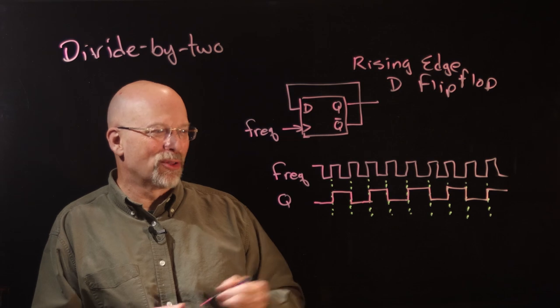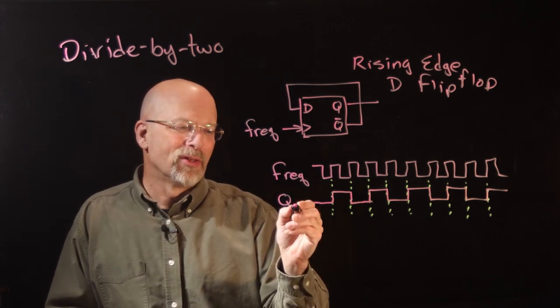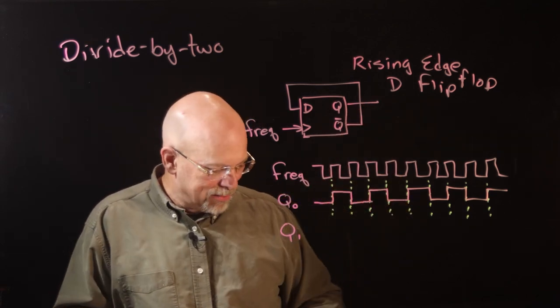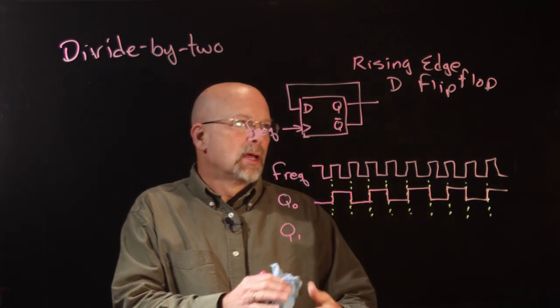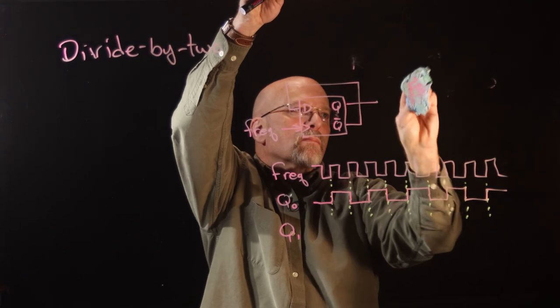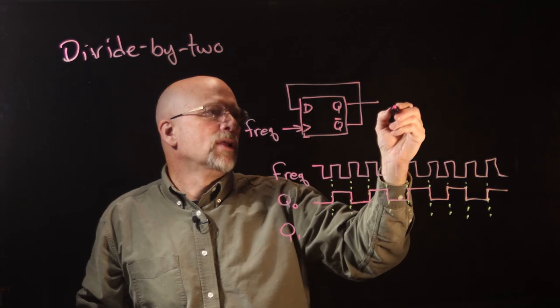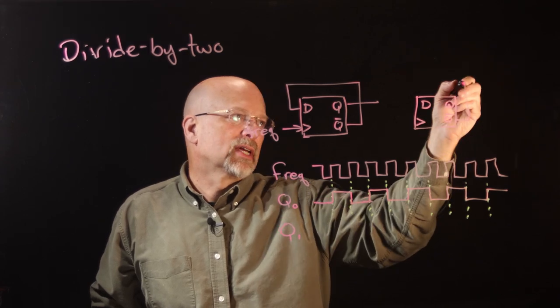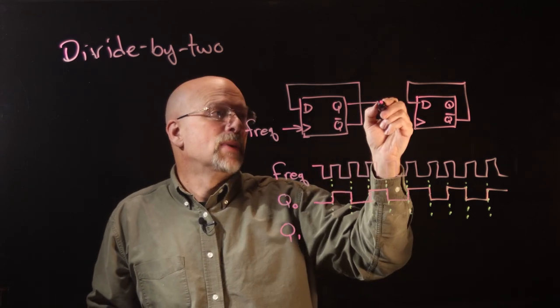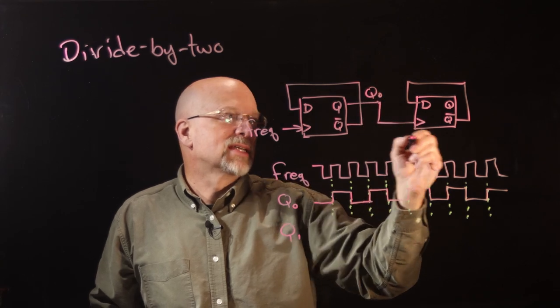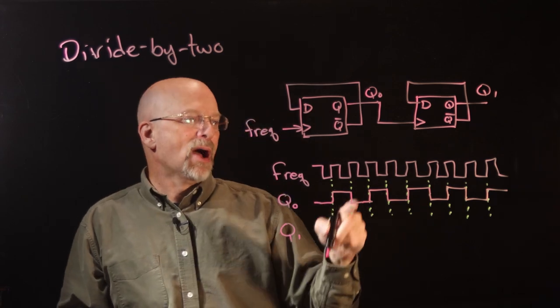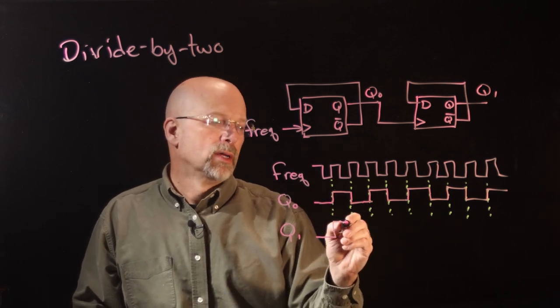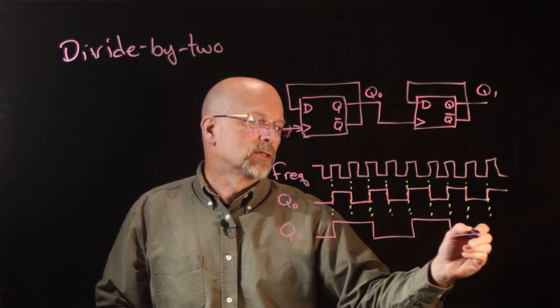Well, you cascade another one onto that. And so now what we do, we'll just call this one Q0, and now if we have Q1, and use this now. So what if I put another one here? So I've got D, clock, Q, and Q bar. And the circuit itself is quite simple. You just connect Q bar into D. But now we take this Q, which we're going to call Q0, we'll put that as the clock into the next one, which is driving Q1. Now what happens is on the rising edges of Q0, we're going to flip Q. So we start out at 0, and it goes to 1, and goes to 0, goes to 1, goes to 0, goes to 1. By cascading 2 divide by 2 circuits, we've divided our frequency by 4.